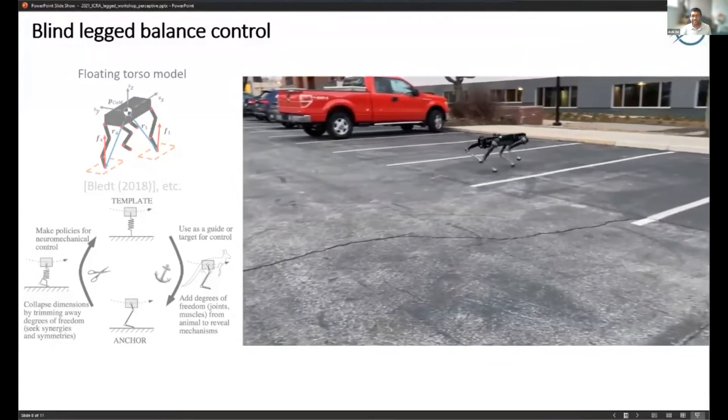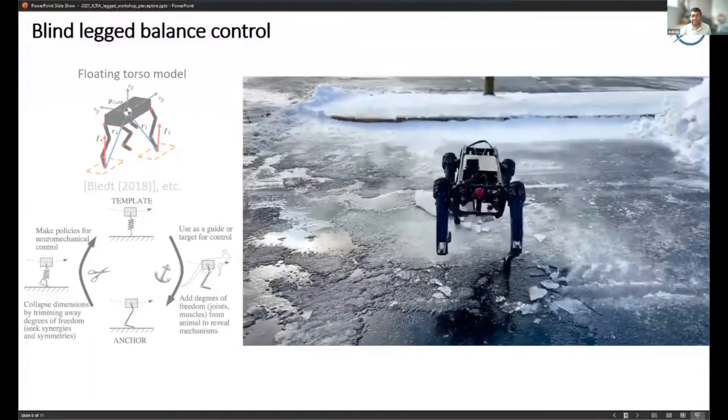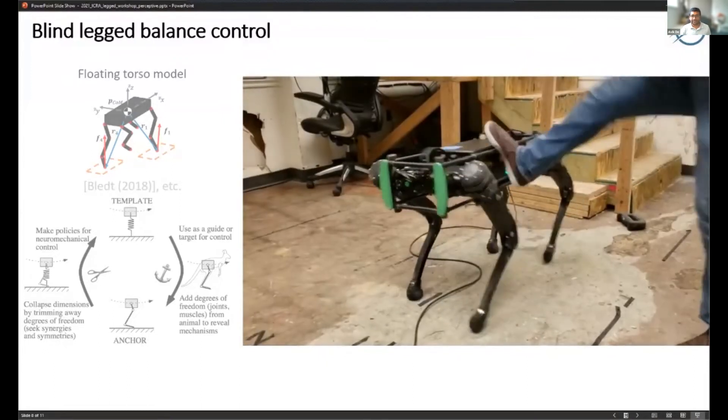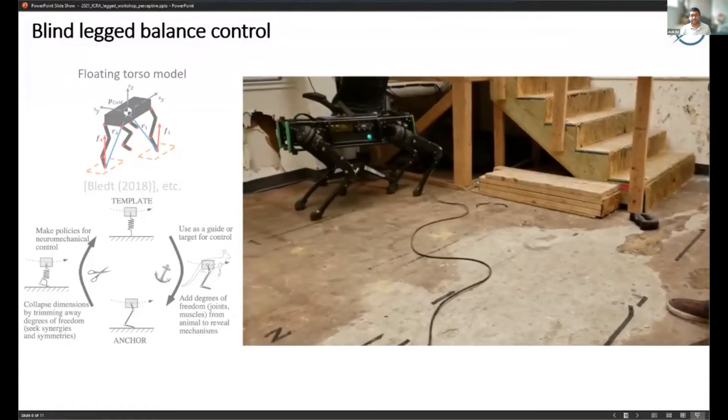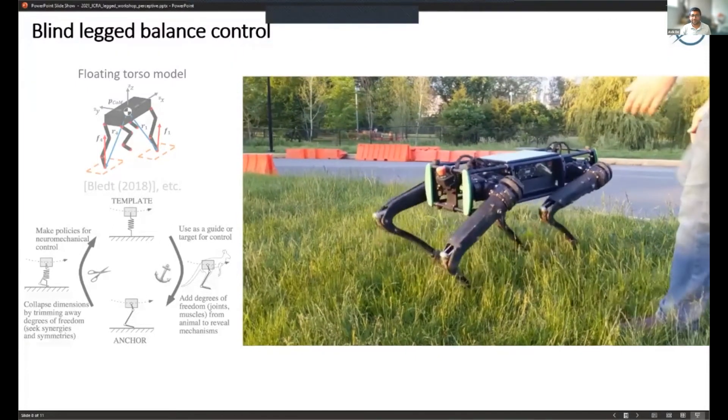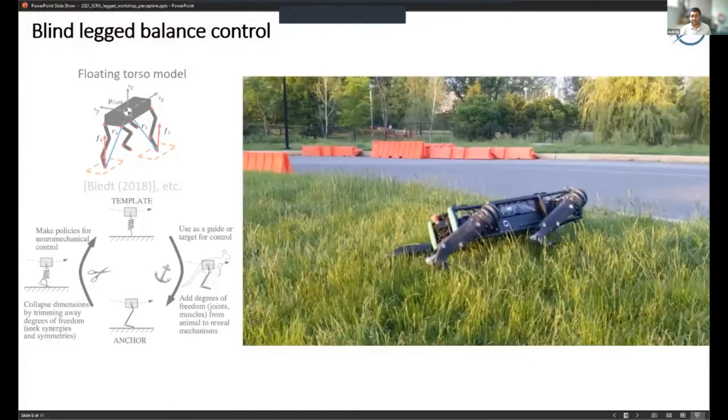The reason we talk about blind a lot is because sometimes perception data isn't reliable - if the ground is shifting or it's very slippery like in this clip. It's good to be able to have some stability with our blind locomotion layer, and that gives us an opportunity to use this simplified floating torso model to do our control.